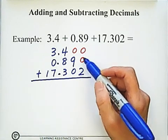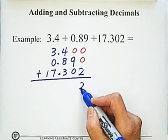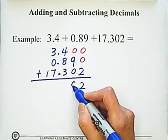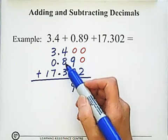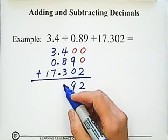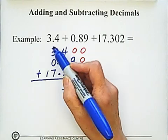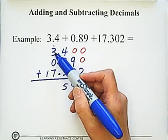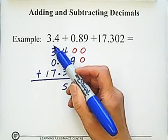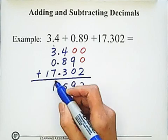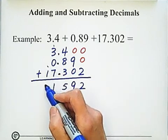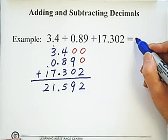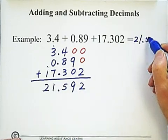Okay, so 0 plus 0 plus 2 equals 2. 0 plus 9 plus 0 is 9. And 4 plus 8 is 12, plus 3 is 15, so we carry 1 here. Then 3 plus 7 equals 10, add 1 is 11, so we carry 1 here. The answer is 21.592.